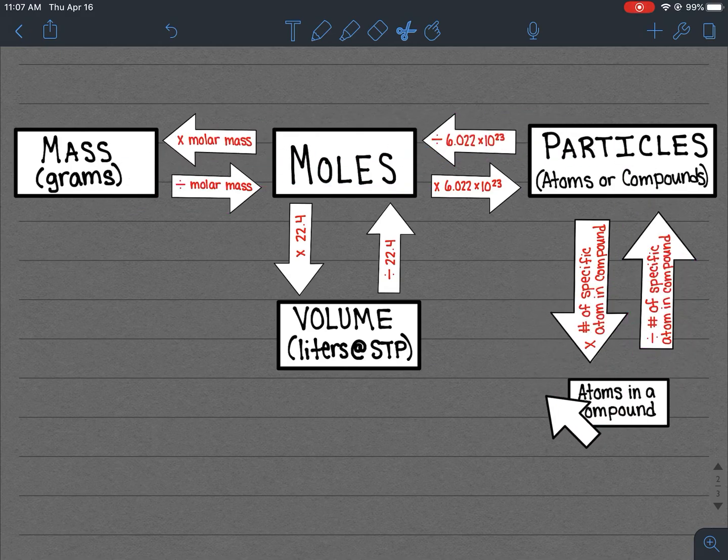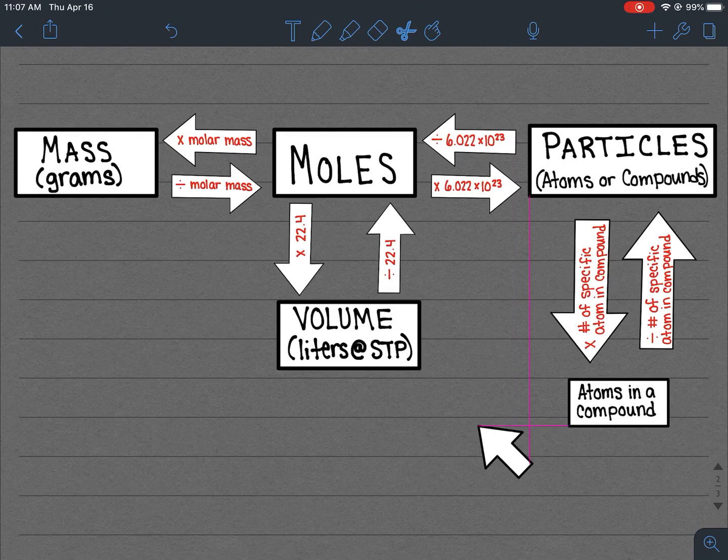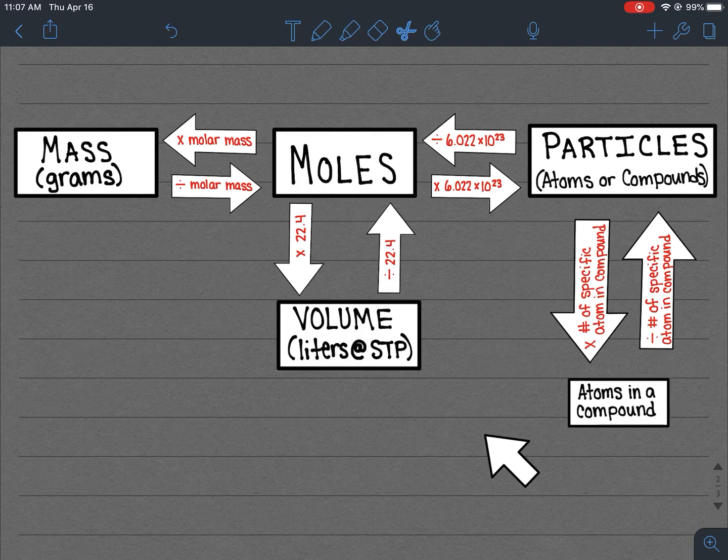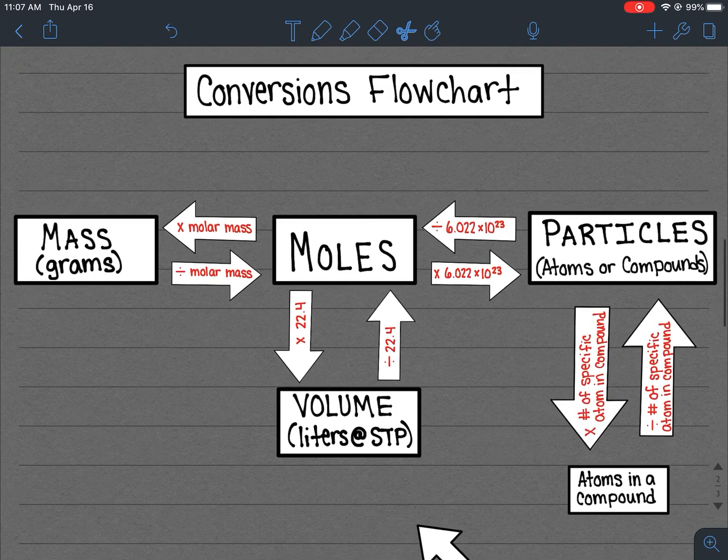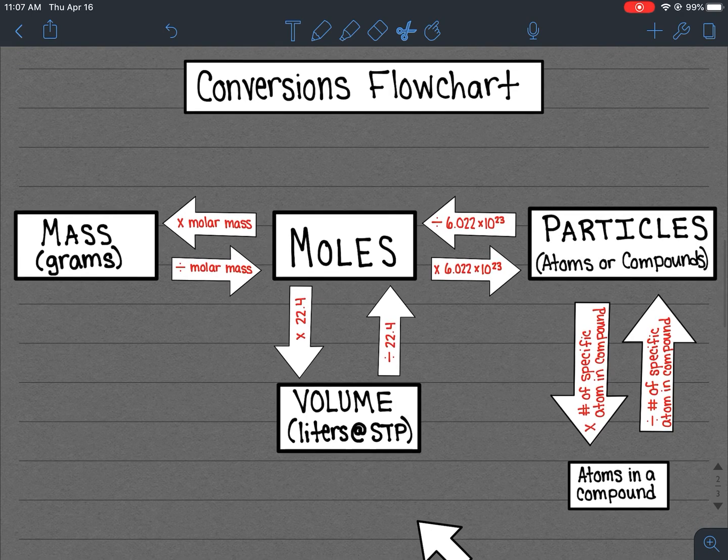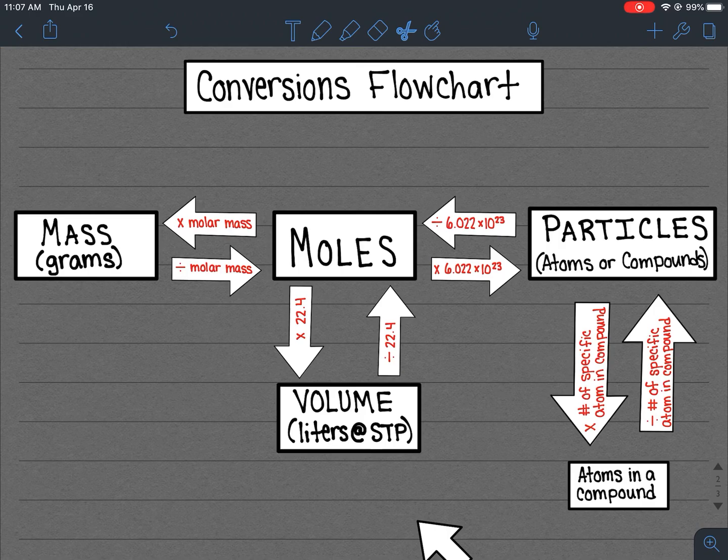So this is nice because it actually helps you with the vast majority of extra little problems that you're given. But again, this does not help you when you're converting atoms to atoms within a compound. So this flowchart is, I think, super helpful in terms of if you're stuck or if you just want to double check to make sure that your dimensional analysis methods are working, just follow the arrows. That's the biggest thing I can tell you.